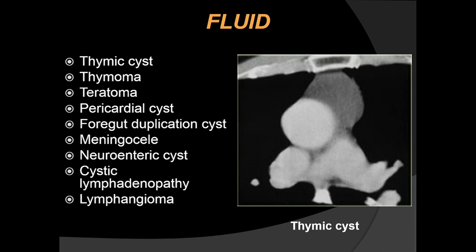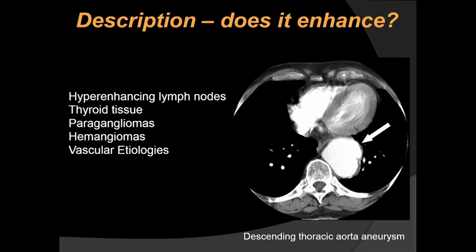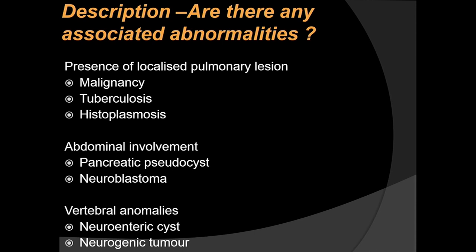Foregut duplication cysts are also among the fluid-containing lesions. A simple unilocular cystic lesion in the anterior mediastinum turned out to be a thymic cyst. Beyond content, it is important to assess whether the lesion enhances. Hyperenhancing lesions include lymph nodes, thyroid tissue, paragangliomas, hemangiomas, and vascular lesions — for example, a descending thoracic aortic aneurysm.